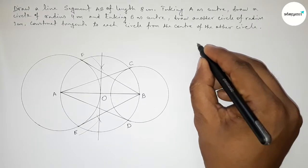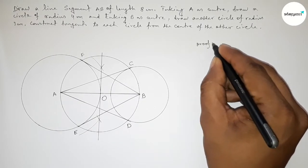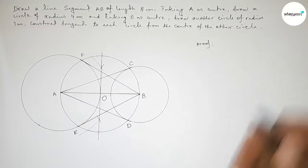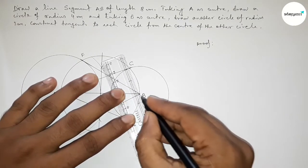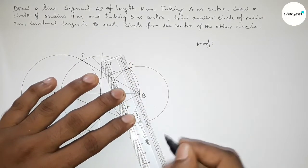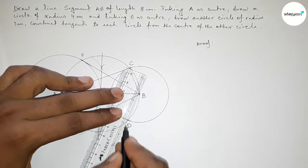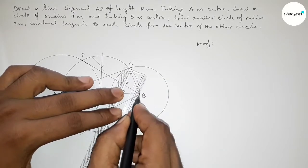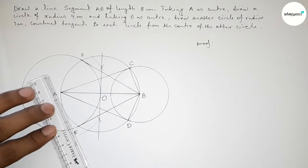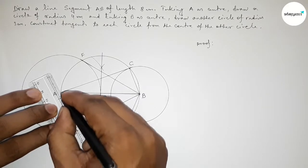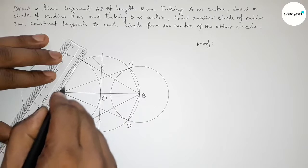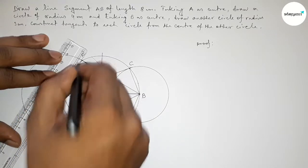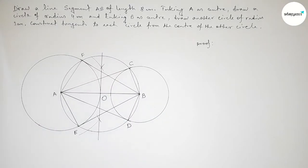Now we have to prove this. First, we join all the sides — joining this side, this side, similarly joining this side and this side as well.